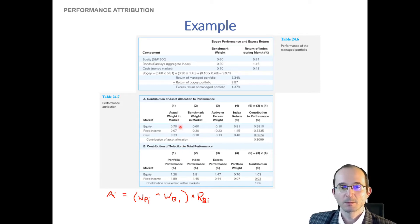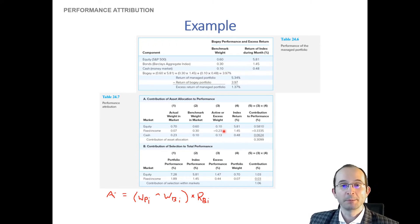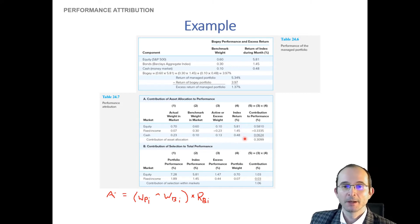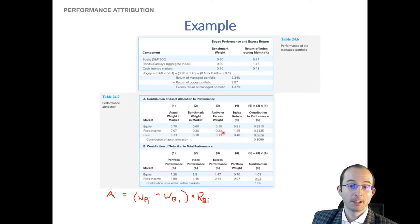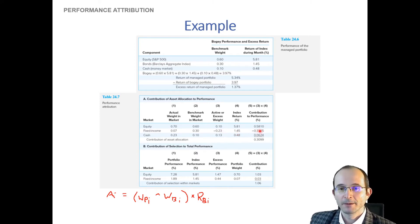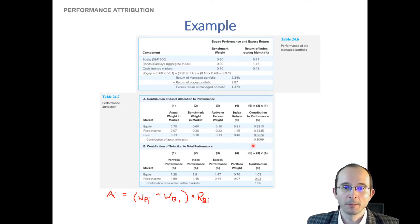Our portfolio weights are 70%, 7%, 23%, and the benchmark weights are 60%, 30%, 10%. Here are the active deviations from the benchmark — we made a big under-allocation to fixed income. We take these differences in weights, multiply them by the benchmark index returns, and add them up. That gives us: 10% over-allocation to equity times the equity return, plus negative 23% under-allocation to fixed income times the fixed income return, plus 13% over-allocation to cash times the cash return.